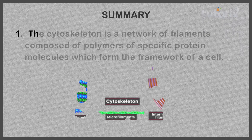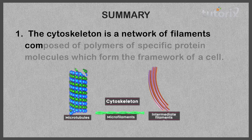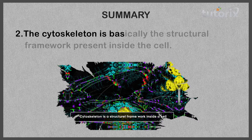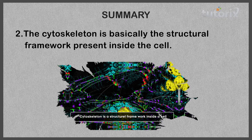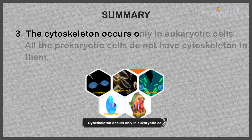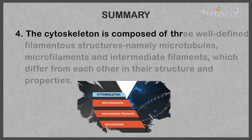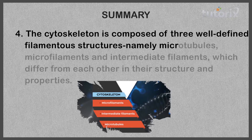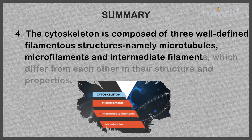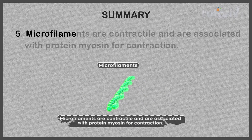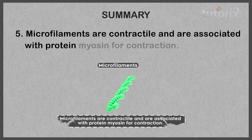To summarize: the cytoskeleton is a network of filaments composed of polymers of specific protein molecules, forming the structural framework of a cell. The cytoskeleton occurs only in eukaryotic cells — all prokaryotic cells do not have it. The cytoskeleton is composed of three well-defined filamentous structures: microtubules, microfilaments, and intermediate filaments, which differ from each other in structure and properties.